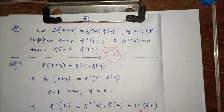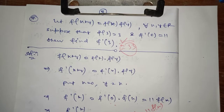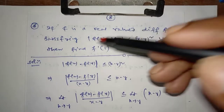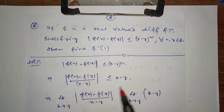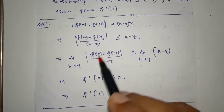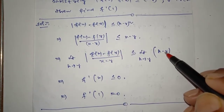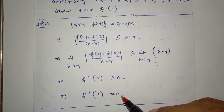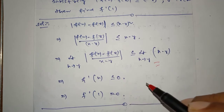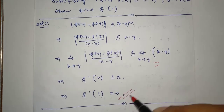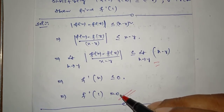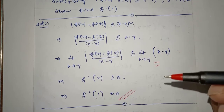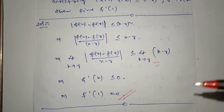Aaj kal JEE Main mein bhi isi type ka question put up kar raha hai. Question 8: If f is a real-valued function satisfying a given inequality for every x, y belongs to R, then find f'(1). Using limit as x approaches y, that gives f'(x) ≤ 0. Put x = 1: f'(1) = 0. This is important for JEE Advanced. Ish answer ko bhi rat lo. JEE Main, JEE Advanced, BITSAT, UP SET — isi type ke questions milne ka opportunity hai.